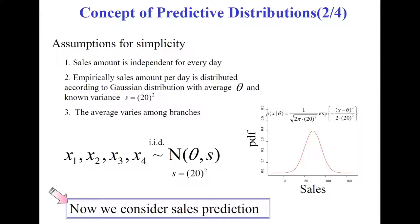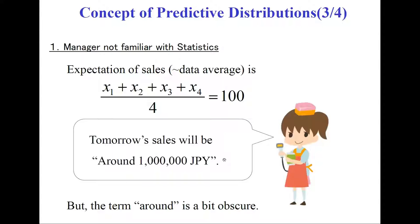Now we consider sales prediction. The first person perhaps is not familiar with statistics, but she will answer: tomorrow's sales will be around 1 million Japanese yen, because the average sales is 100. However, the term 'around' is a bit obscure because it is a point prediction, and she does not account for the Gaussian model.